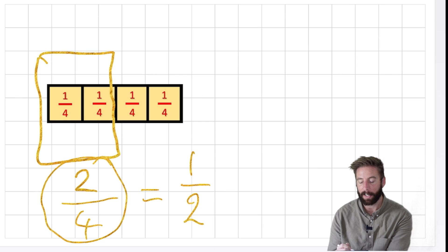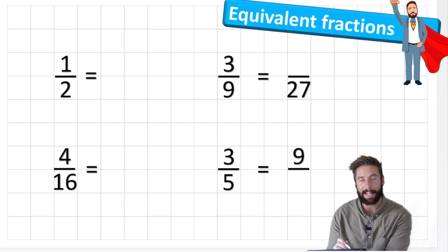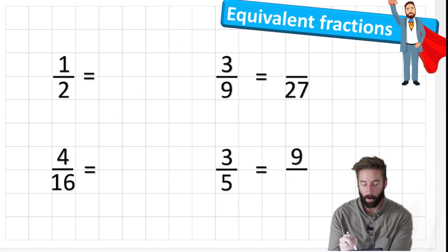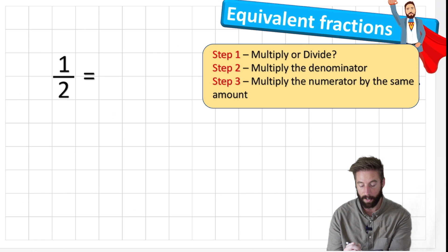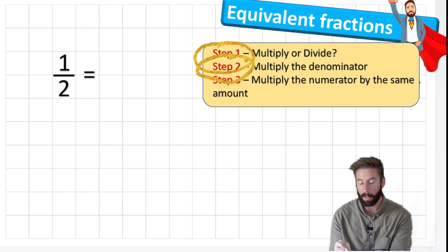Let's have a look at question one and see what we need to do to answer it. We're going to look at this one half and try to find some equivalent fractions for it. We have three steps: step one is to multiply or divide, step two is to multiply the denominator, and step three is to multiply the numerator by the same amount.